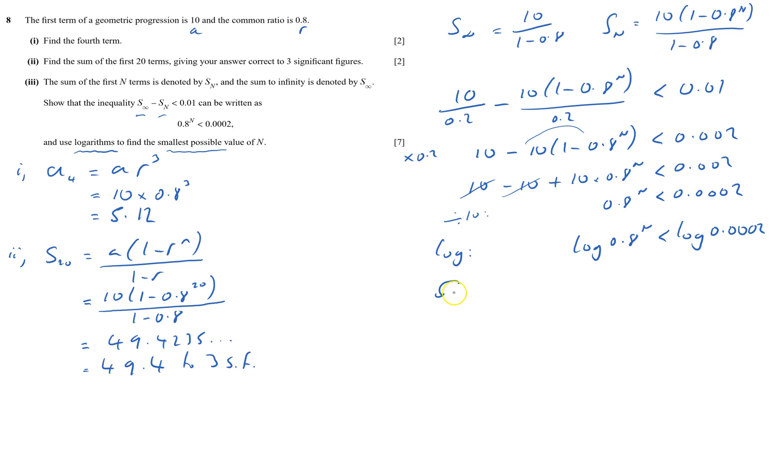Next thing, the power bit comes down to the front, that's what that means for my terms. n times log 0.8 is less than log 0.002. I'm now going to divide by log 0.8. And because it's less than 1, that is negative, and therefore the sign needs to switch around. So n is greater than log 0.002 over log 0.8.